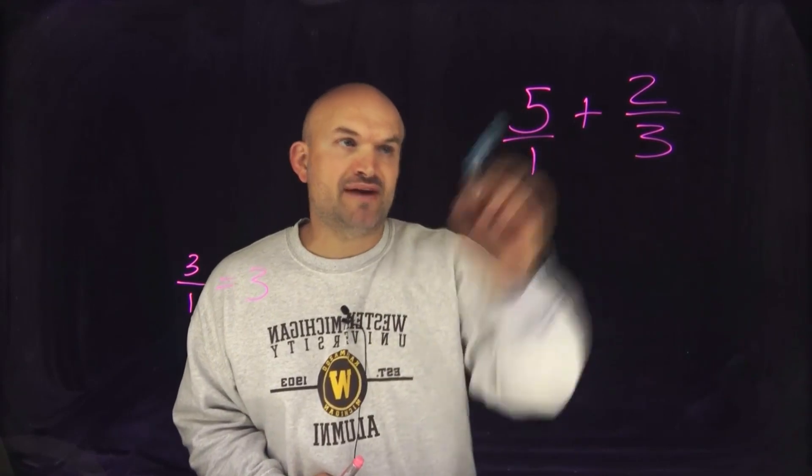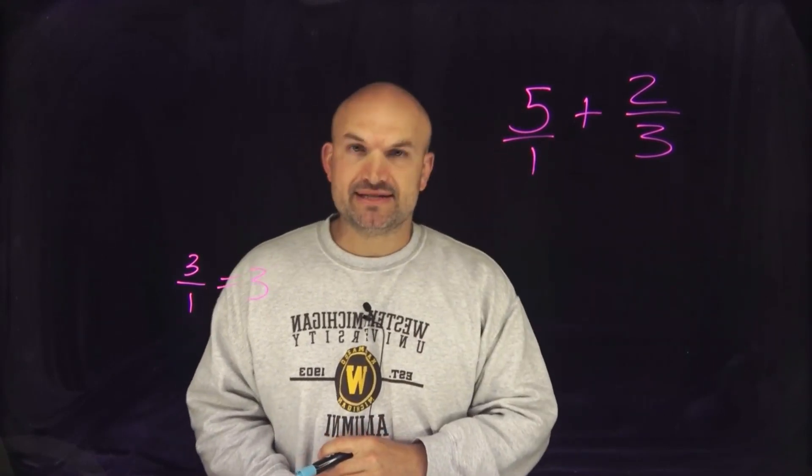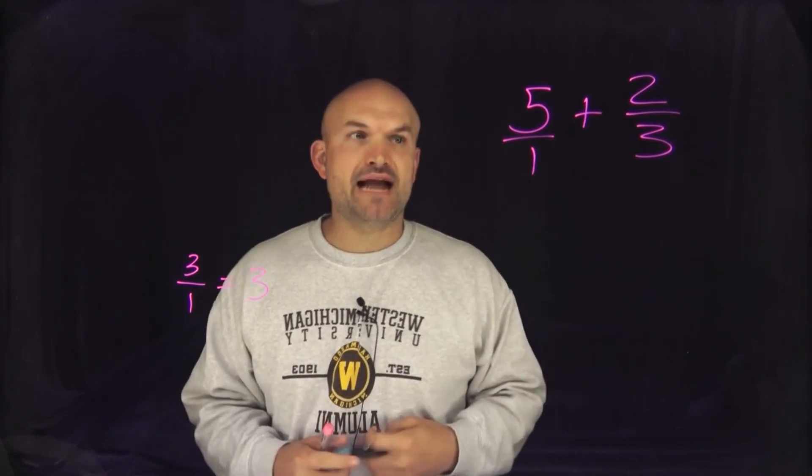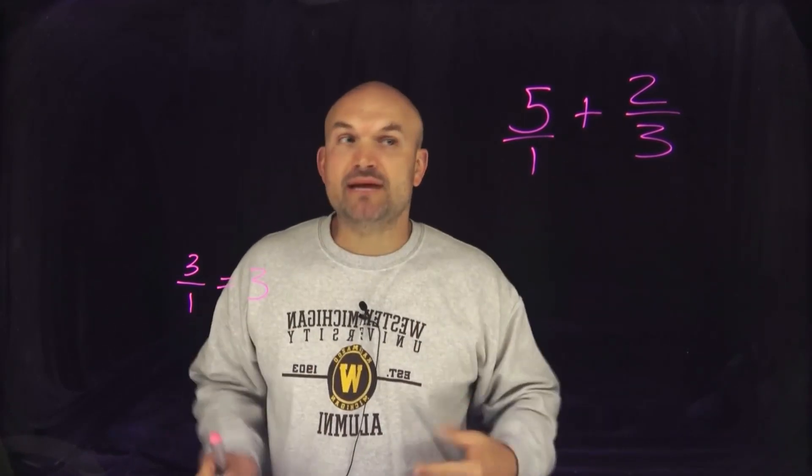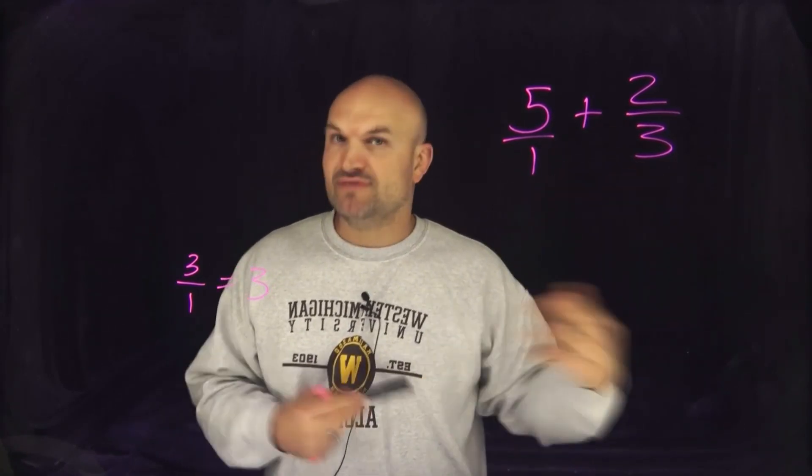So in this case you can see that I rewrote my 5 as 5 divided by 1, and now I need to ask, what is my least common denominator between 1 and 3?